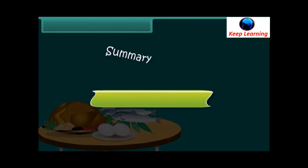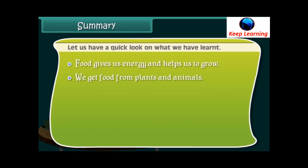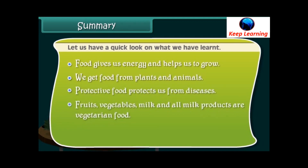Summary. Let us have a quick look at what we have learnt. Food gives us energy and helps us to grow. We get food from plants and animals. Protective food protects us from diseases. Fruits, vegetables, milk, and all milk products are vegetarian food. Eggs, chicken, meat, and fish are non-vegetarian food.